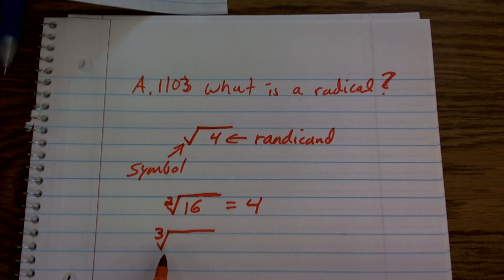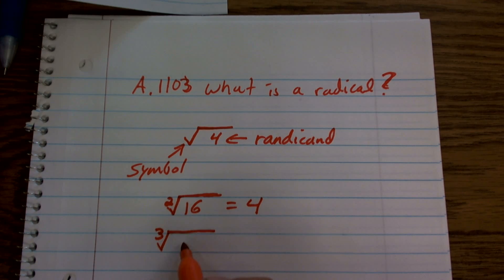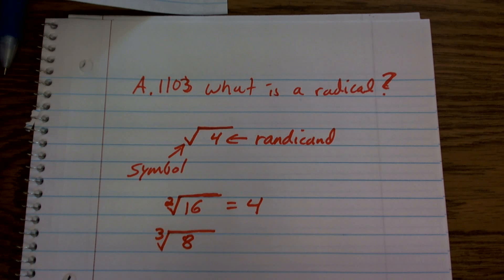However, then we get into our cube root, where we mean 3. So if I said, what is the cube root of 8, that means what number multiplied by itself 3 times is going to give you 8. And this instance is going to be 2.